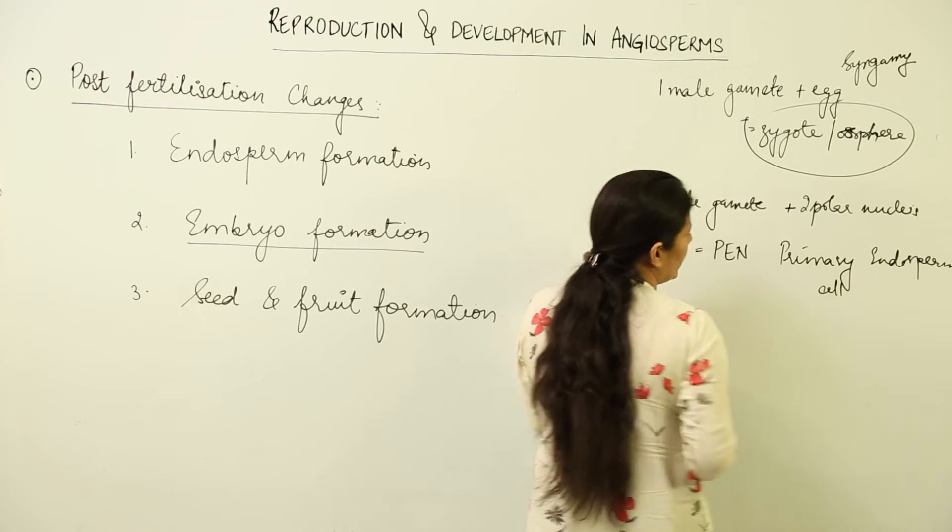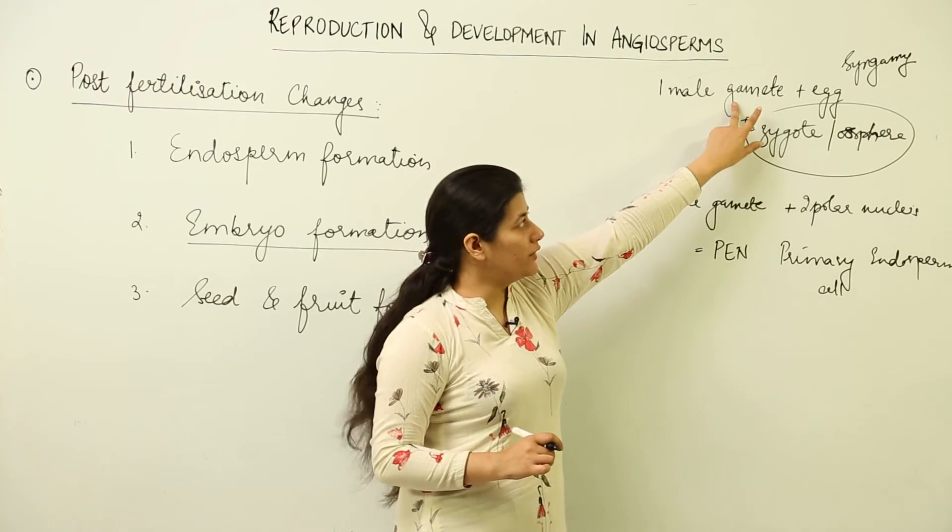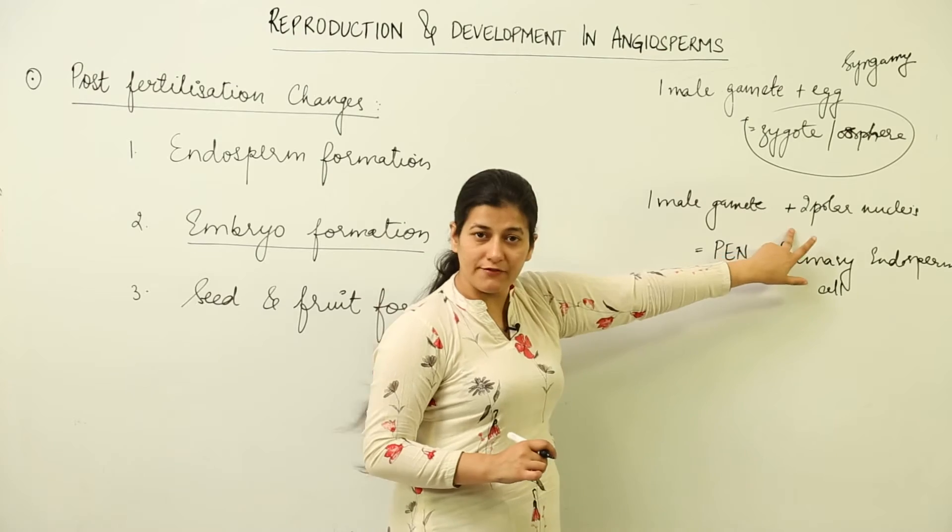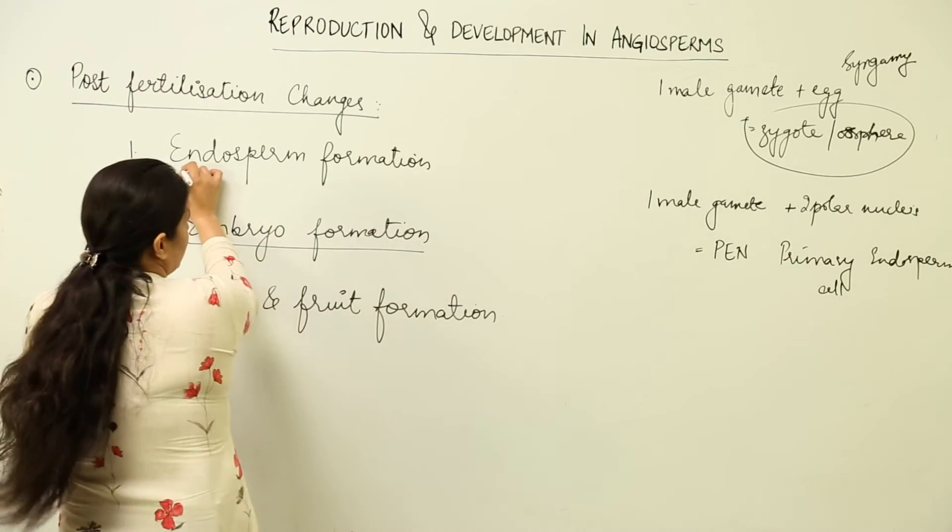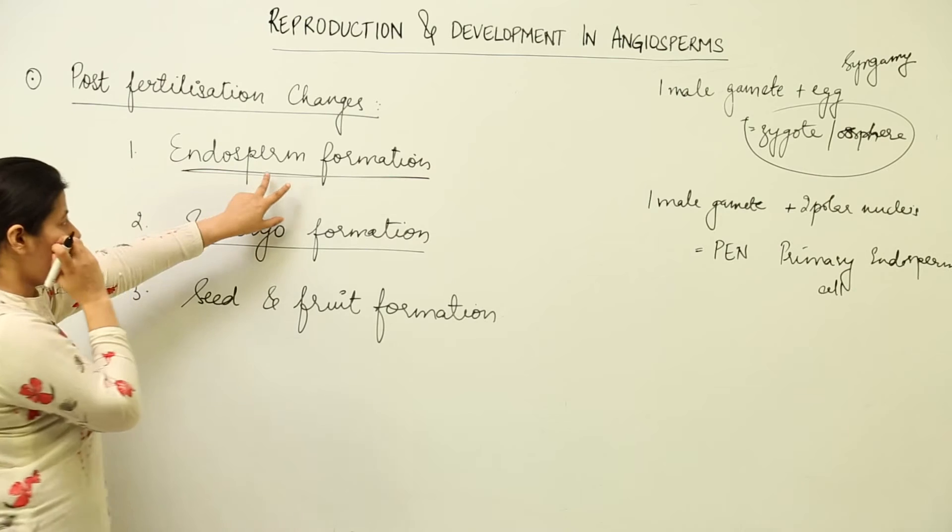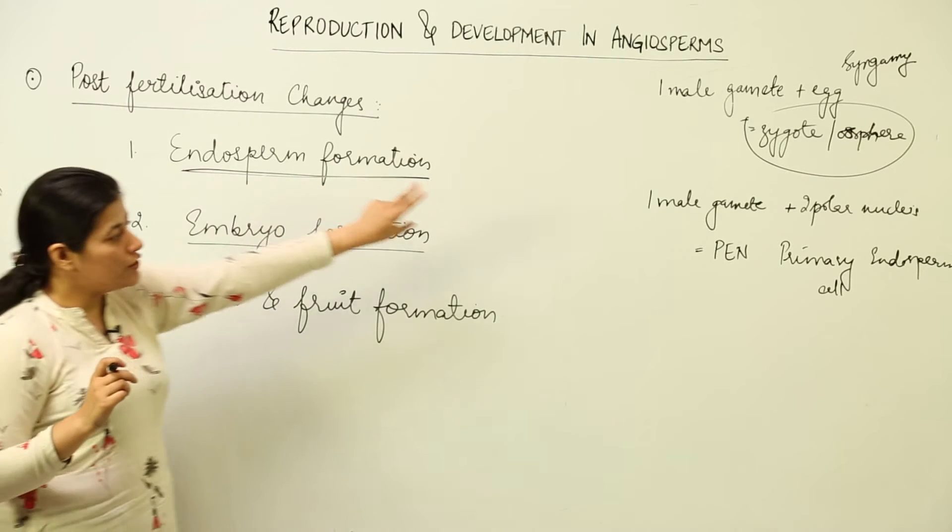This is the endosperm cell. This one was syngamy; this one, triple fusion, is studied in the post-fertilization development where we have endosperm formation from the primary endosperm cell.